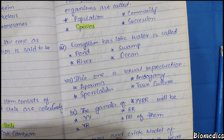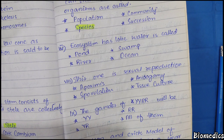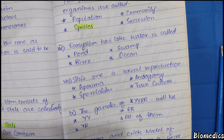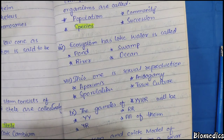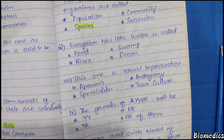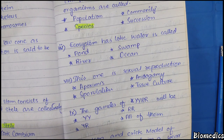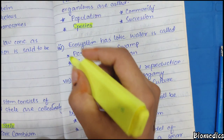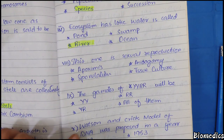In the ecosystem, what do we call lentic and lotic water? Lentic water is still, standing water — like a pond or swamp. Lotic water is flowing water — like a river. So river water is continuously flowing, making it lotic water.